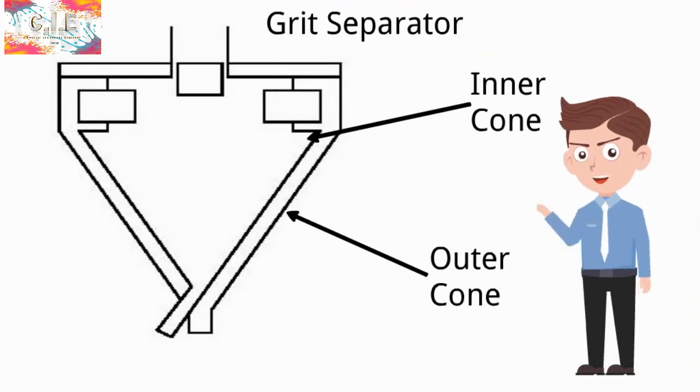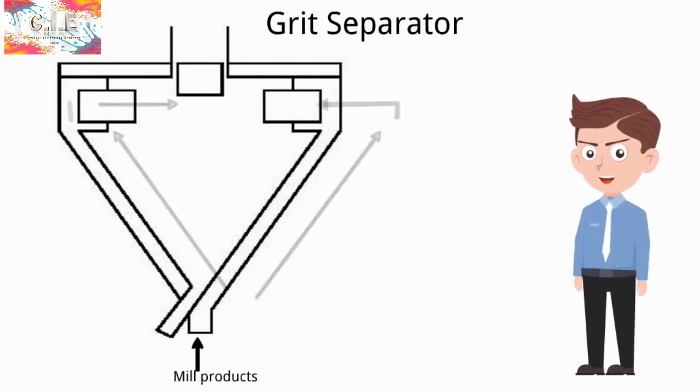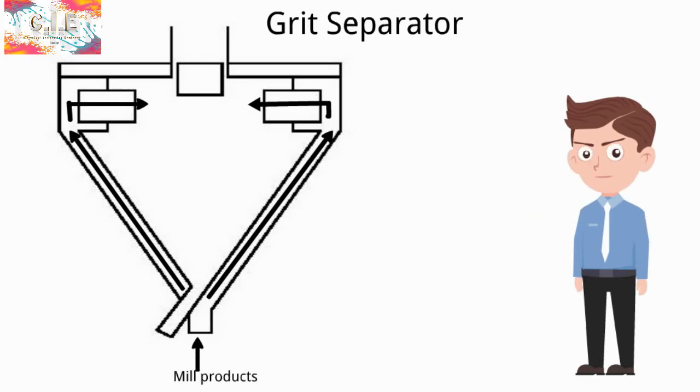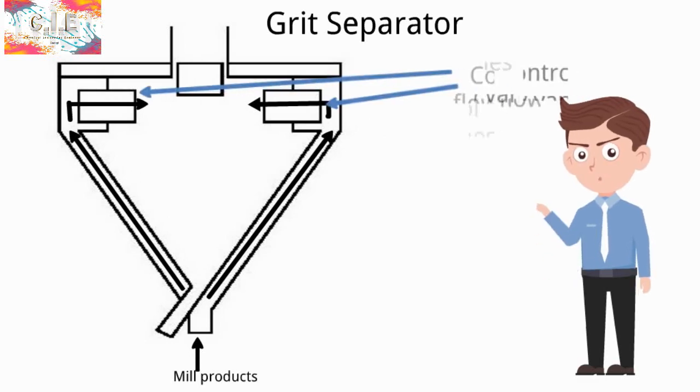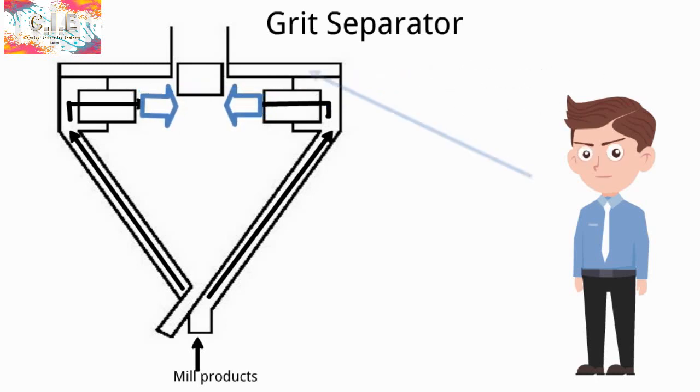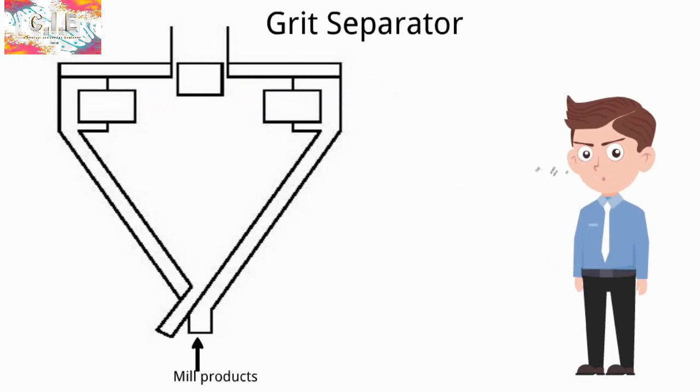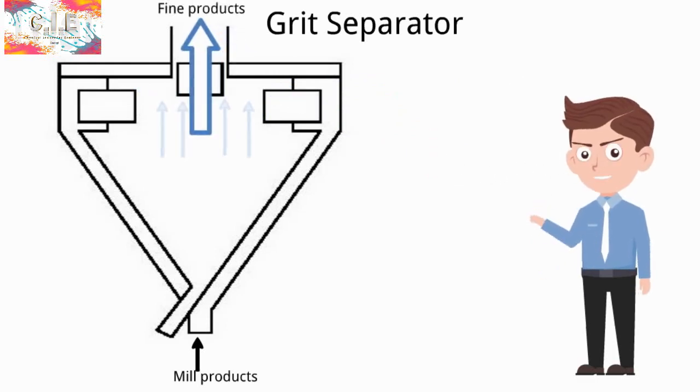The air which comes from the mill enters to the separator and passes from the bottom of the outer cone, and then enters to the inner cone. Its flow is controlled by control flow vanes and bumps into separation vanes which are located at center of the top outlet, where final products will leave the cyclone from the top with the air stream.